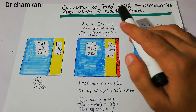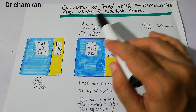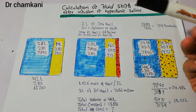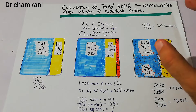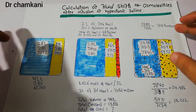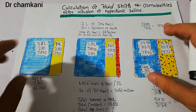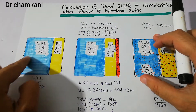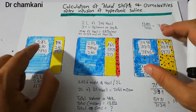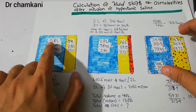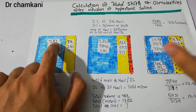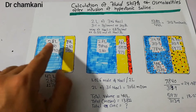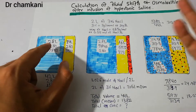In this experiment we will infuse a person with two liters of three percent sodium chloride and then see how the intracellular fluid volume and the extracellular fluid volume change. Before starting, we revise that in a normal patient there is around 28 liters of fluid present inside the cells — around 40 percent of body mass.